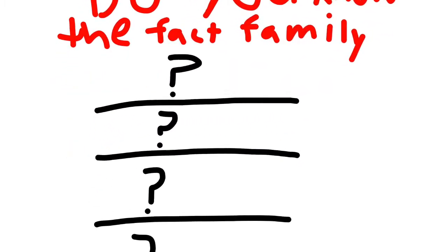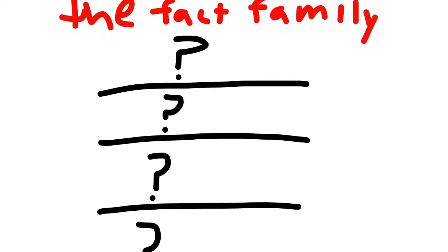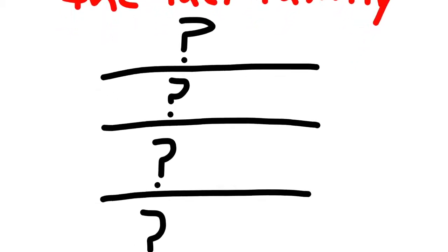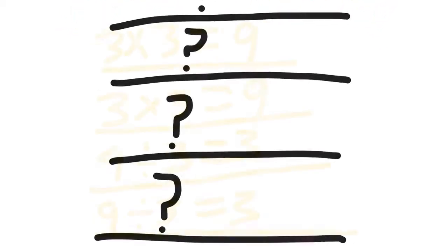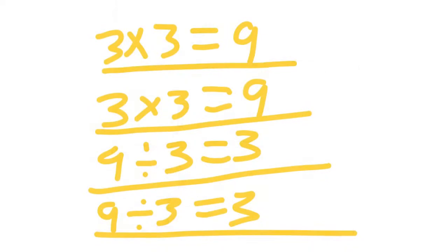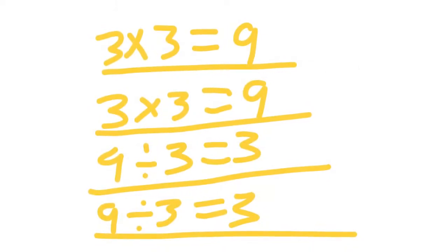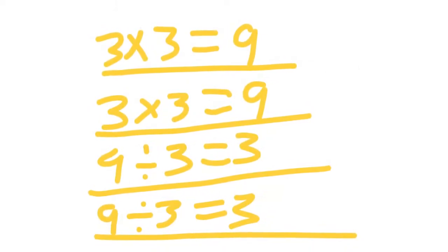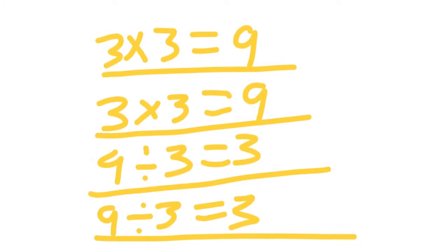Do you know the fact family? Three times three equals nine. Three times three equals nine. Nine divided by three equals three. Nine divided by three equals three.